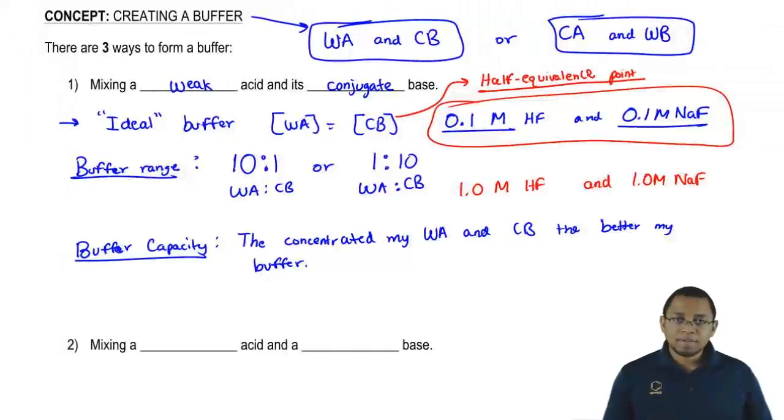So remember the difference between buffer capacity and buffer range. The best buffer is when they're both equal in amount. The buffer range says they could be a 10 to 1 ratio. Once it's outside that 10 to 1 ratio, the buffer is still a buffer but it's going to be a bad buffer. It'll get destroyed very quickly by a strong acid or base that we add.